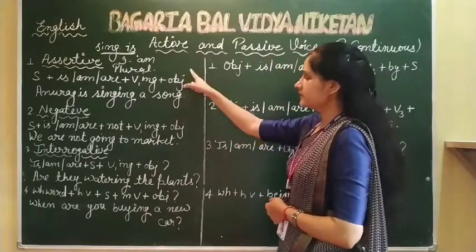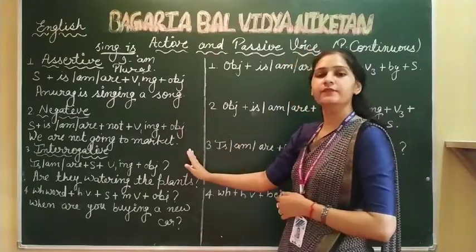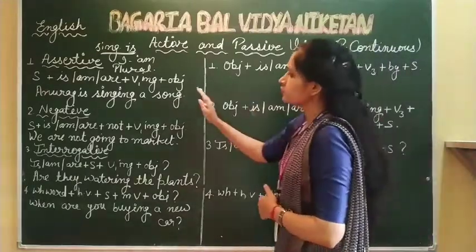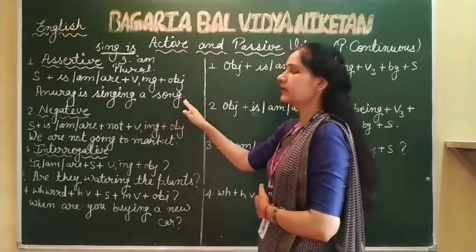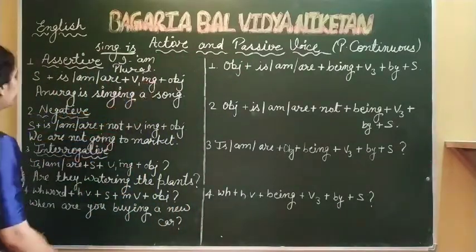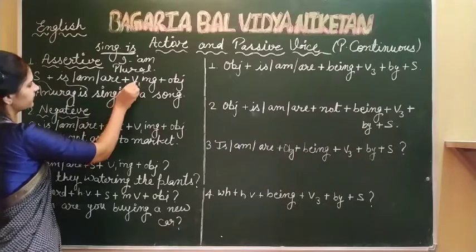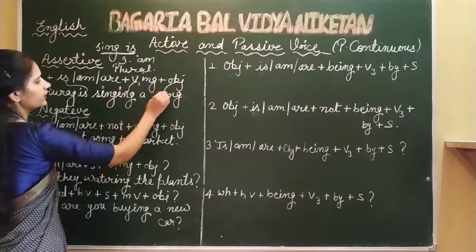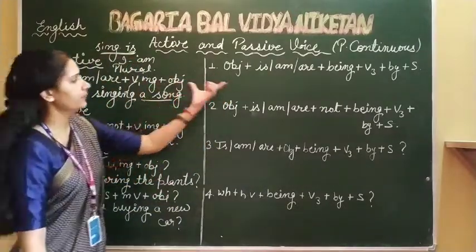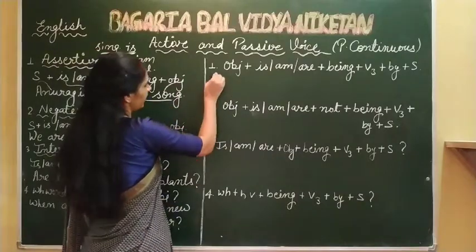I have written active sentences on this side, and here we will learn how to change that sentence to passive sentence. So the first sentence is assertive: 'Anurag is singing a song.' First you have to categorize just the way I have shown. According to the syntax I have written, my sentence will also form. This is my subject, this is my helping verb, then main verb first form in -ing, and this is my complete object.